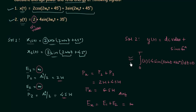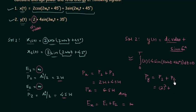Since the DC value and the sine function satisfy the orthogonality condition, we can directly find the average power of signal y(t). py = p1 + p2, where p1 = 2² = 4 and p2 = 4²/2 = 8, giving py = 12 watts.